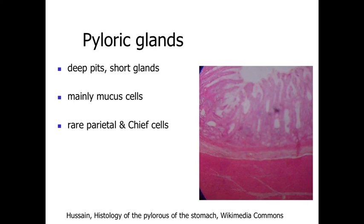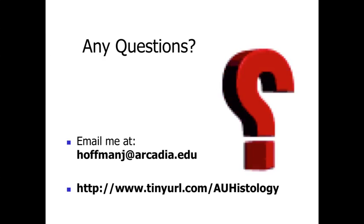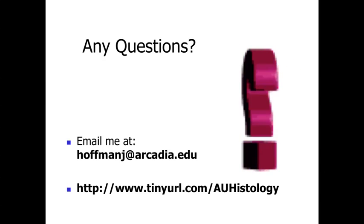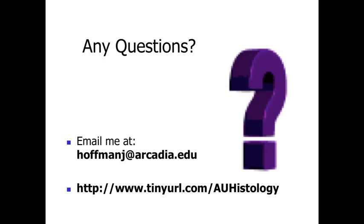In the pyloric region of the stomach, which opens into the small intestine, we have very deep pits and relatively short glands. This region is primarily composed of mucus-secreting cells, giving a relatively pale staining appearance in hematoxylin and eosin stained specimens. Parietal cells and chief cells are rarely found here. This concludes our discussion of the stomach — part four will cover the intestines.